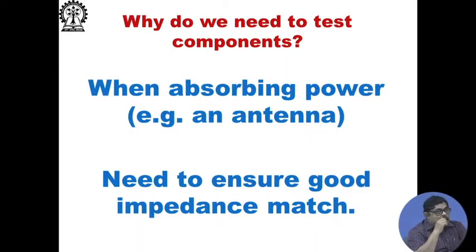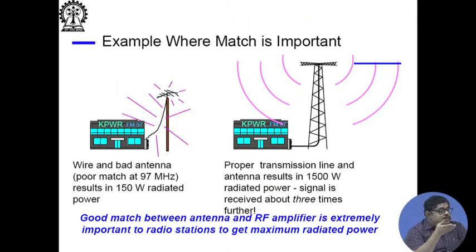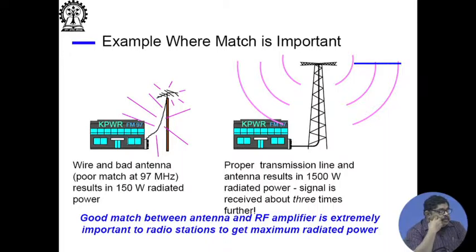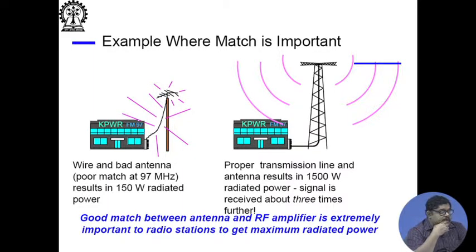Mixers need to be tested for whether they are properly rejecting various signals. Also, when we supply power to an antenna, we need to ensure good impedance match — whether the antenna is radiating the power supplied. With a poor match, 150 watts can be wasted, but with proper matching that same antenna can radiate 1500 watts, extending range from 40 km to 120 km. Good match between antenna and amplifier is extremely important to get maximum radiated power.